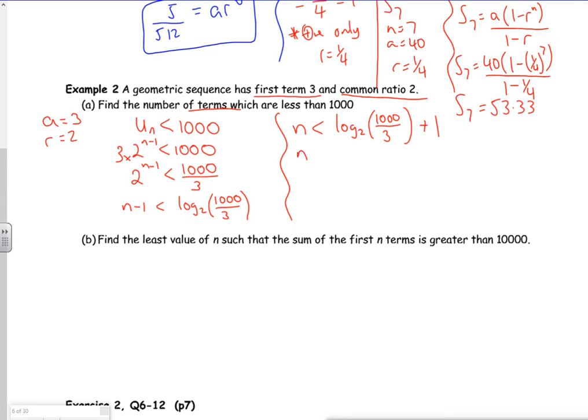So that gives me that n is less than 9.38. So at 9.38, it's dead on. But you want a whole number, don't you? So what I'm looking for then, is the ninth term. So that's the last one which is less than 1000.